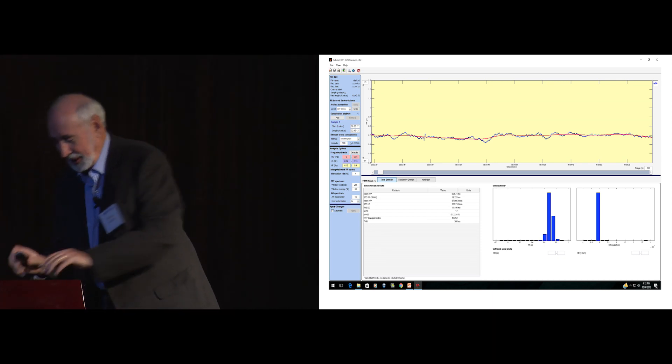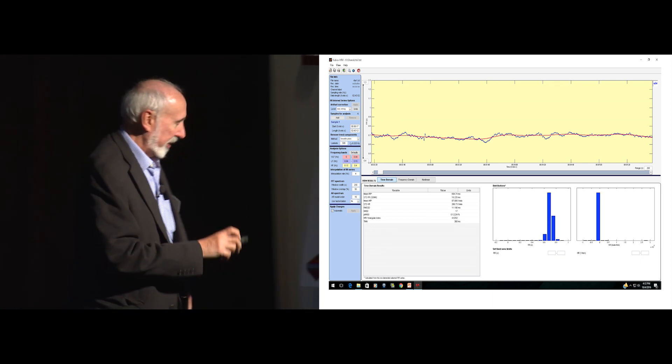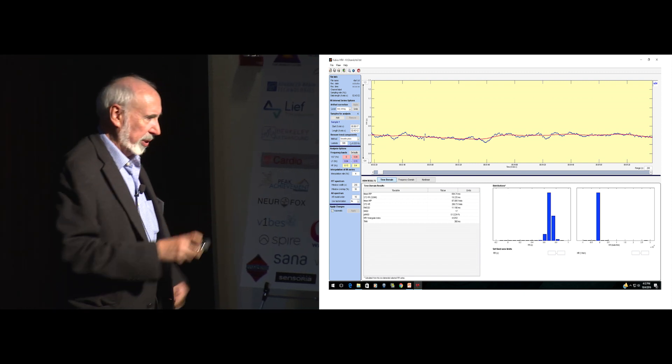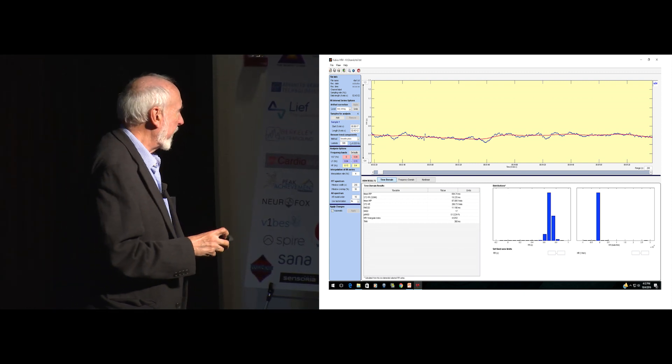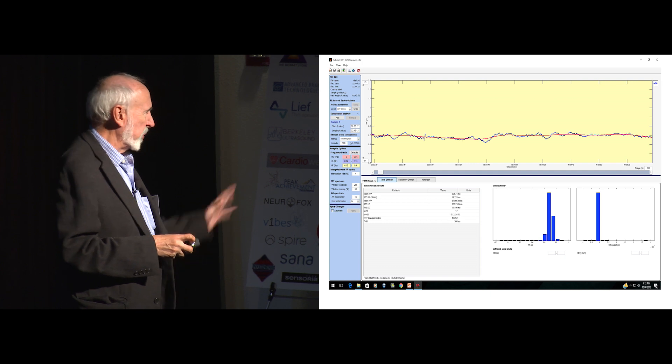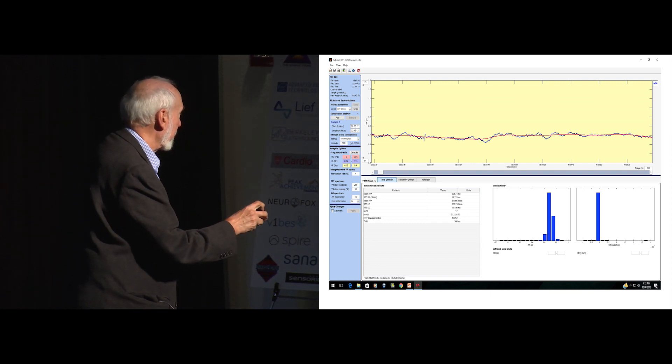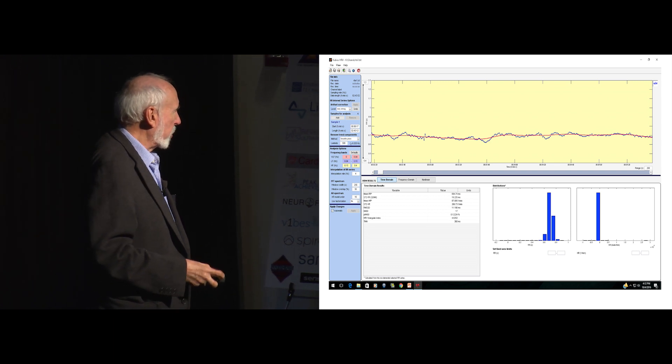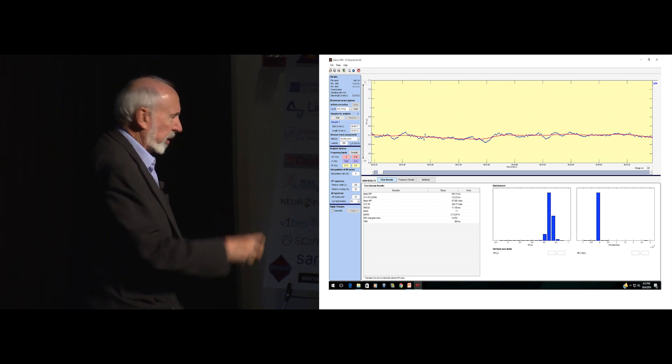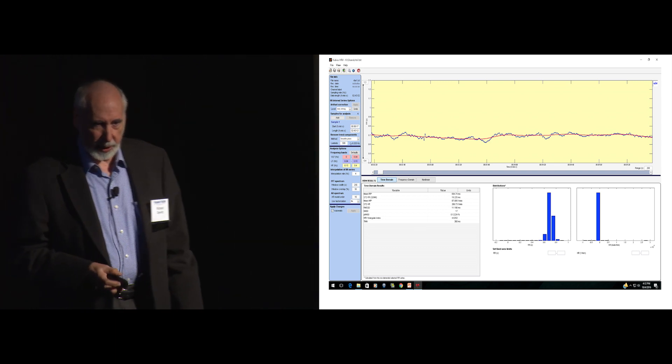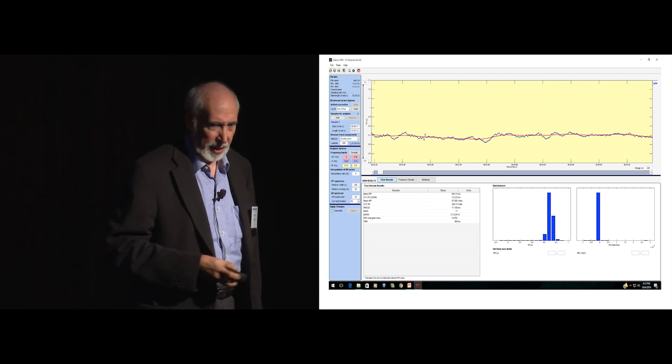If you look at that tracing, that's a tracing of interbeat interval, the distance between R waves of the heart, over a course of about seven minutes. If you went to the general public and you said, what does that look like? They'd say, well, that's a nice-looking heart rate, right? Nice and steady as a metronome.